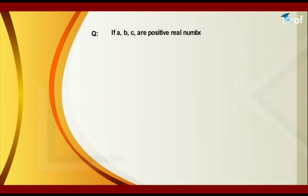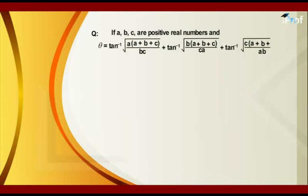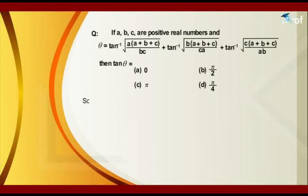The next question: if a, b, c are positive real numbers and θ equals tan inverse of sqrt(a(a+b+c)/bc) plus tan inverse of sqrt(b(a+b+c)/ca) plus tan inverse of sqrt(c(a+b+c)/ab), then find the value of tan θ. The options are 0, π/2, π, and π/4.